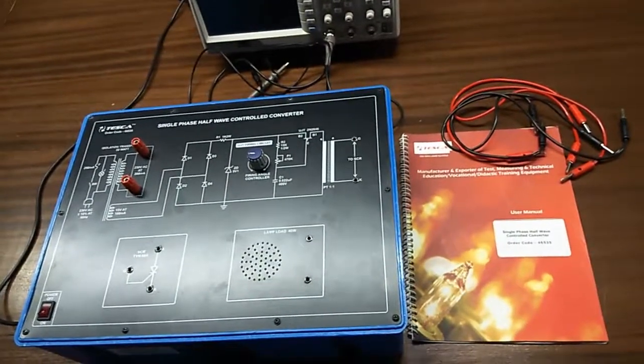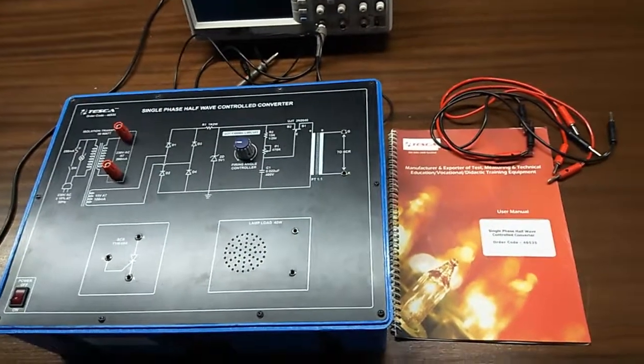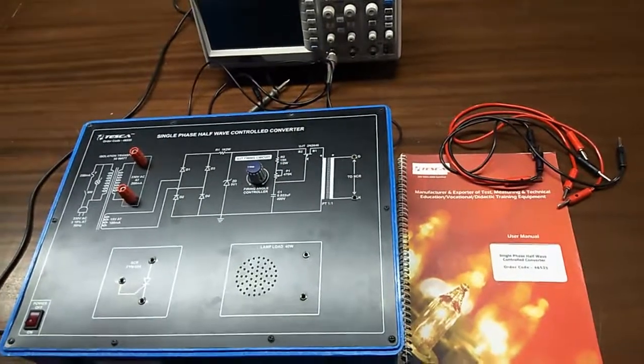Today, we are going to show you our single phase half wave controlled converter trainer kit. The order code is 46535.